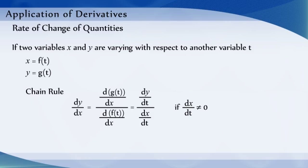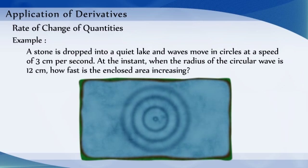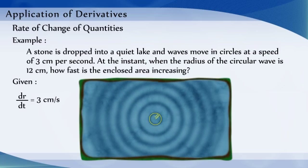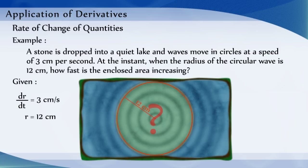Let us understand the concept with the help of an example. A stone is dropped into a quiet lake and waves move in circles at a speed of 3 cm per second. At the instant when the radius of the circular wave is 12 cm, how fast is the enclosed area increasing?